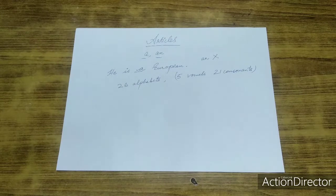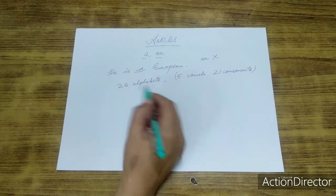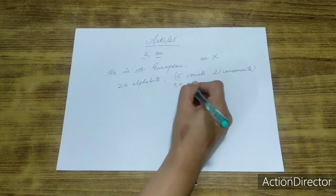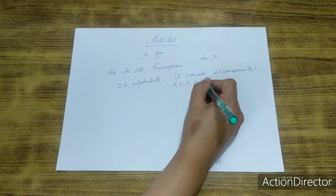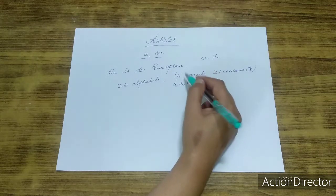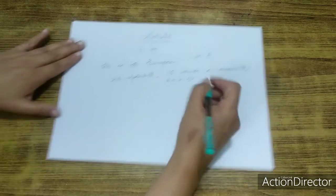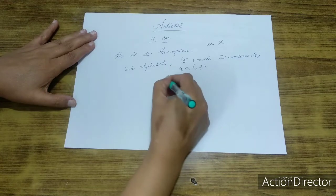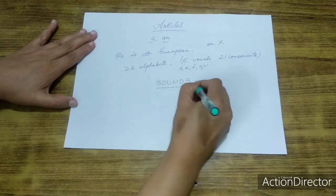But when we apply articles, we do not follow the alphabet rule, that it will be A, E, I, O, U. We do not follow the five vowels rule. What we follow is the sounds.